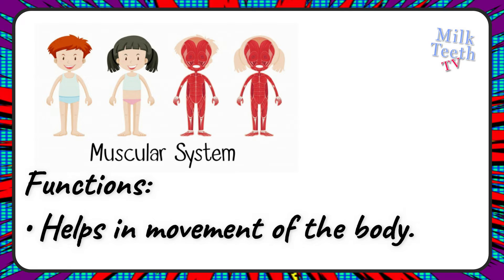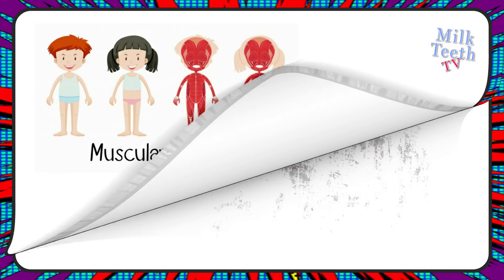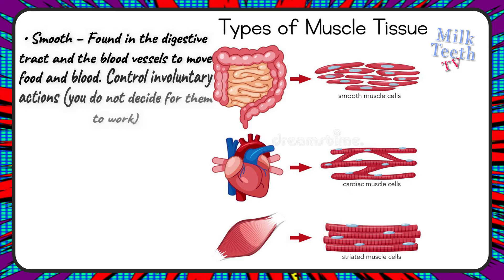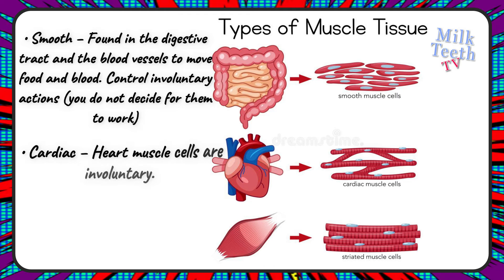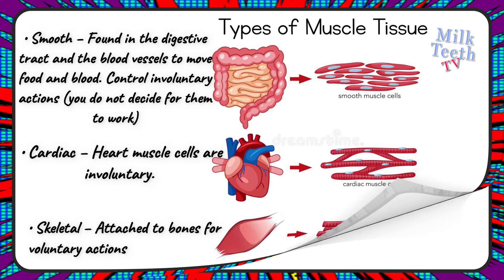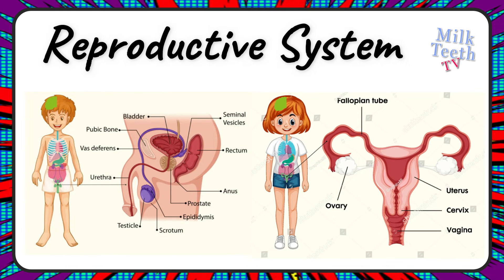The muscular system. Functions of the muscular system: helps in the movement of the body. Types of muscle tissues: smooth muscles, found in the digestive tract and the blood vessels to move food and blood — these control involuntary actions. Cardiac muscles are the heart muscle cells, also involuntary in nature. Skeletal muscles are attached to the bones for voluntary actions that we can control.